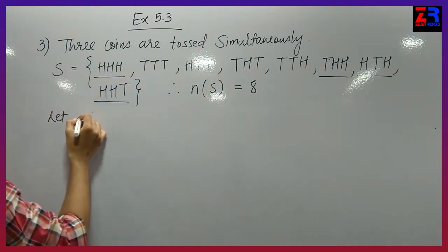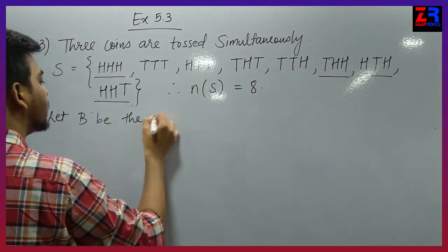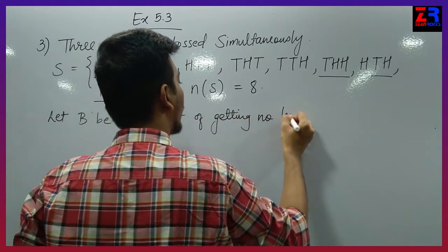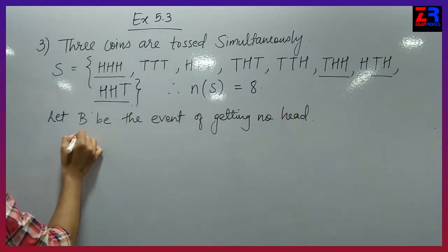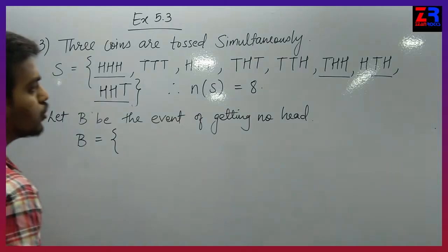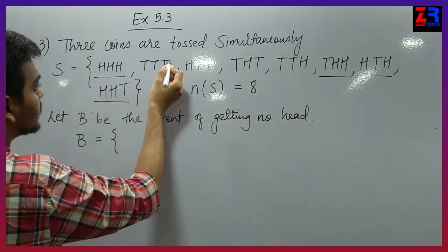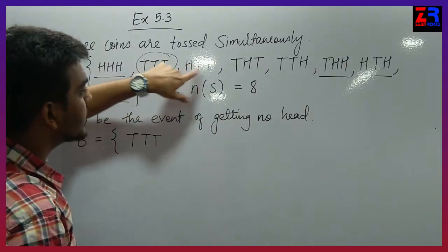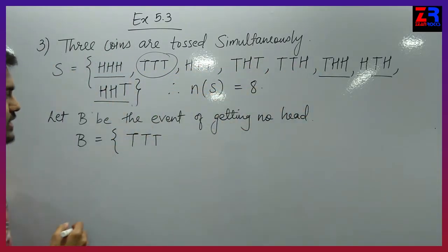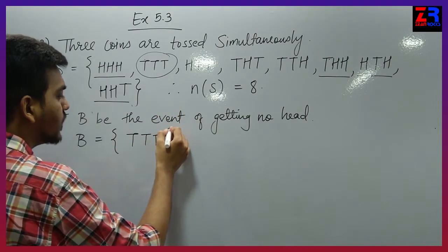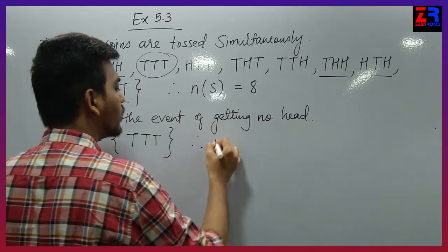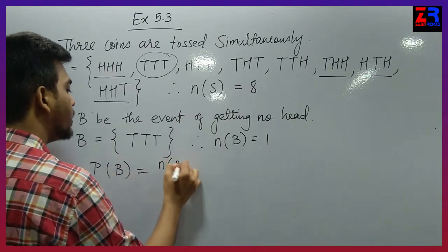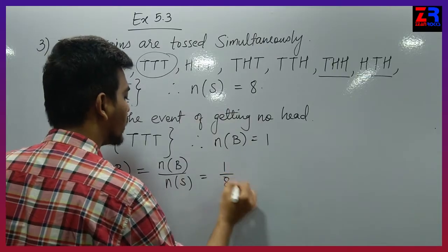Second condition: let B be the event of getting no head. Getting no head means there should not be any head. So the only outcome is TTT. In all the remaining possibilities there is H, so only one element comes, which is TTT. Therefore N of B equals to 1. Probability of B equals to N of B upon N of S = 1 upon 8.